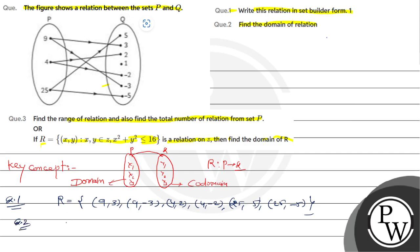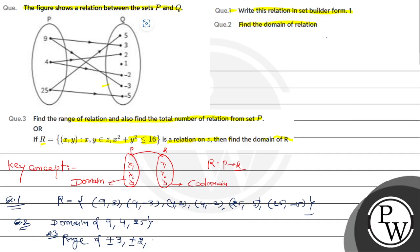Now the domain: the domain is represented by {9, 4, 25}. And the range of the relation — the range here is {3, minus 3, 2, minus 2, 5, minus 5}, i.e., {±3, ±2, ±5}.